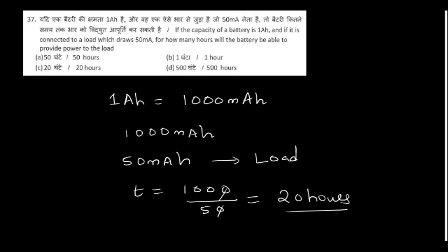If the capacity of a battery is one ampere-hour and it is connected to a load which draws 50 milliamps, for how many hours will the battery be able to provide power to the load? One ampere-hour means 1000 milliamps. The load draws 50 milliamps of current. Then what is t? 1000 divided by 50, you'll get 20 hours as the answer.